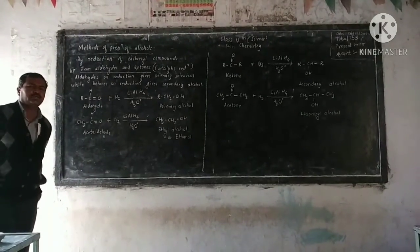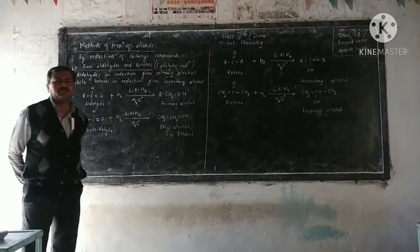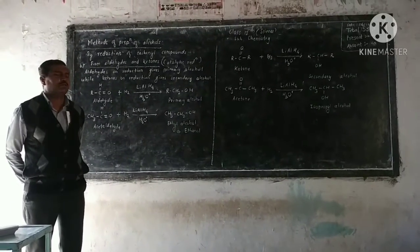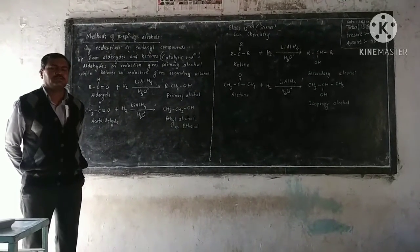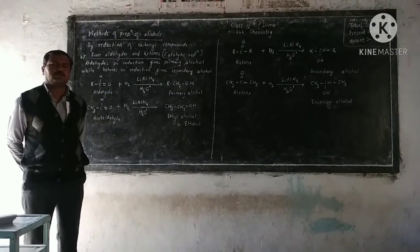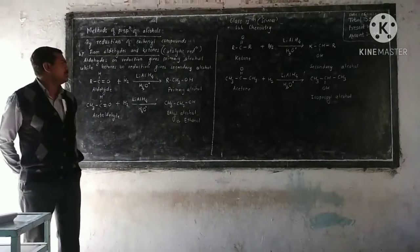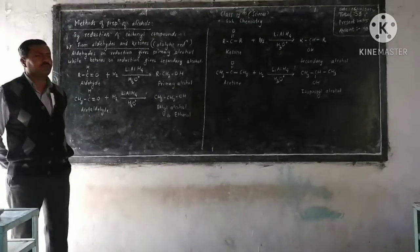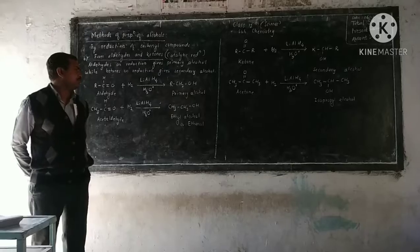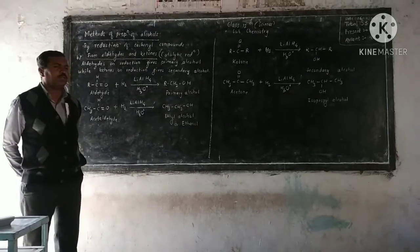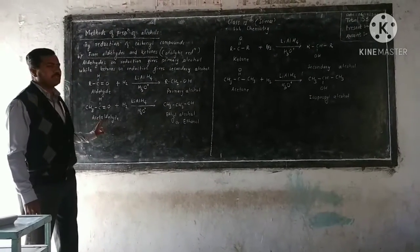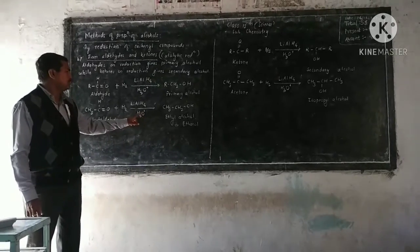Another method of preparation of alcohol using reduction uses lithium aluminum hydride (LiAlH₄) as the reducing agent, which is the most powerful reducing agent. Aldehyde on reduction in the presence of lithium aluminum hydride gives primary alcohol.